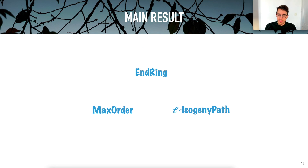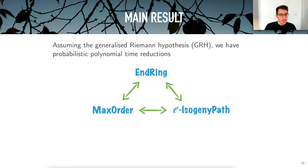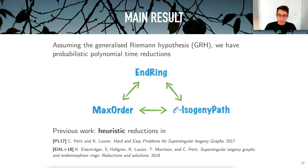I have now presented all three problems involved in the main result, so I can state it. The main result is that they are all equivalent under probabilistic polynomial time reductions, assuming the generalized Riemann hypothesis. Previously, there were some known heuristic reductions between these problems proved in two prior articles; the contribution of this new article is that the problems are equivalent not just heuristically, but provably assuming only the generalized Riemann hypothesis.